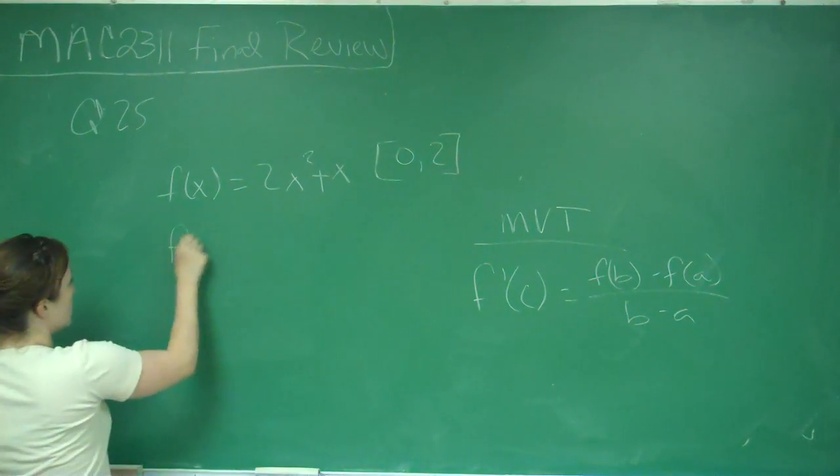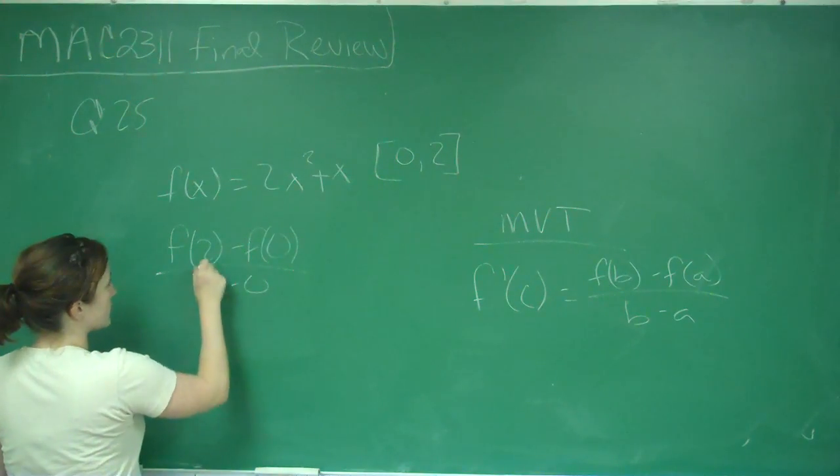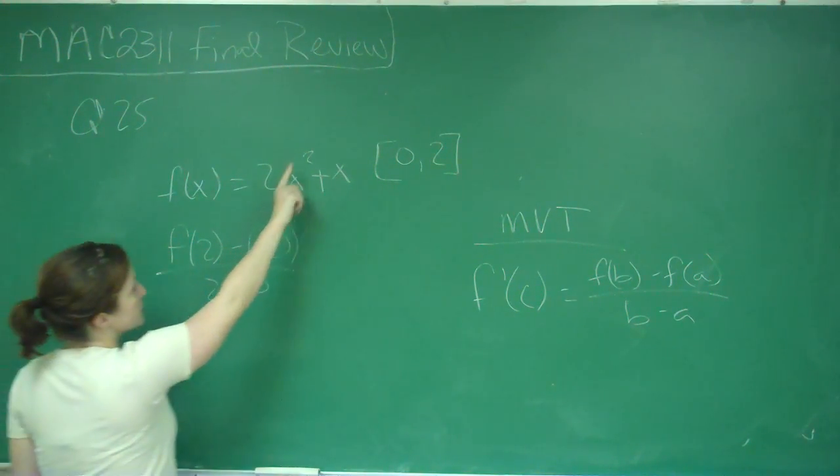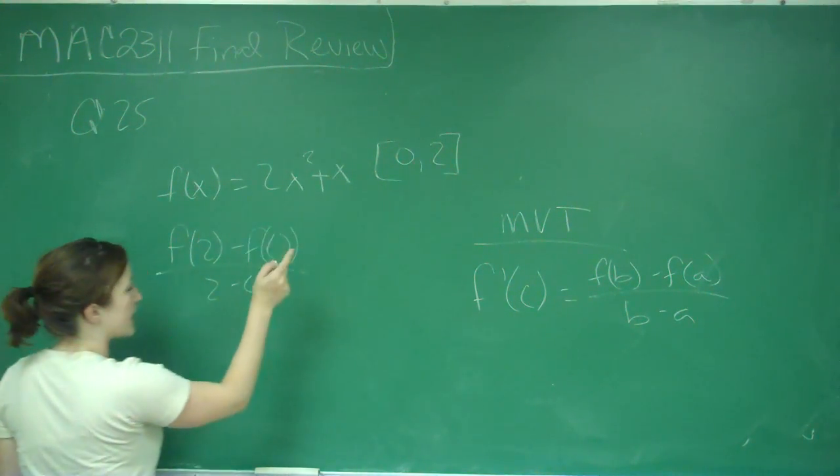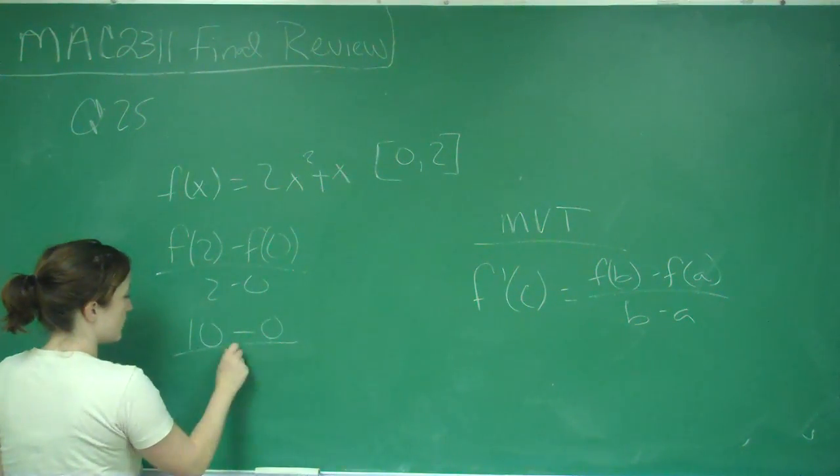So we're going to be doing f of 2 minus f of 0 all over 2 minus 0. So f of 2, when we plug it in, 2 squared is 4 times 2 is 8 plus 2 is 10 minus f of 0 is 0 all over 2.